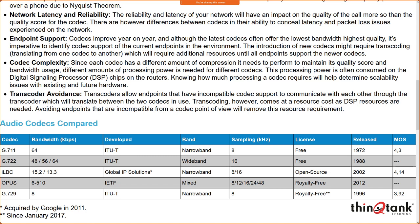ILBC is another speech codec designed for narrowband speech that uses both 8K and 16K sampling. It has a Mean Opinion Score of 4.14 — still over toll quality. ILBC handles voice quality issues related to lost frames and generates a much lower bandwidth of only 13.3 kilobits per second.